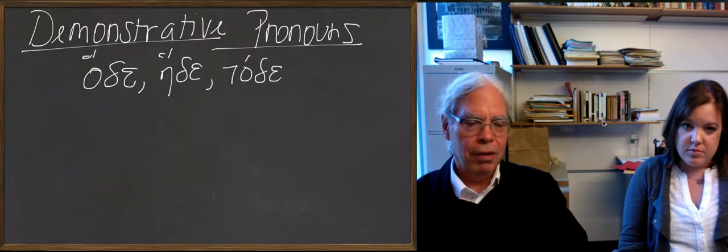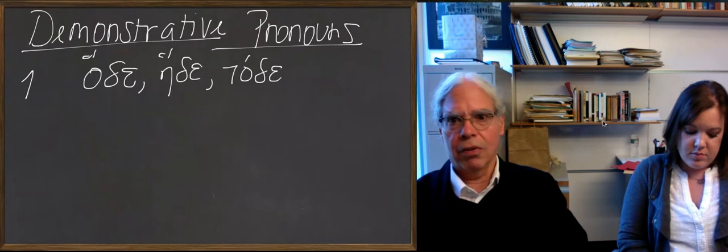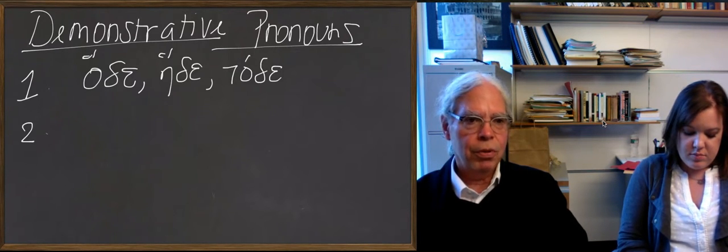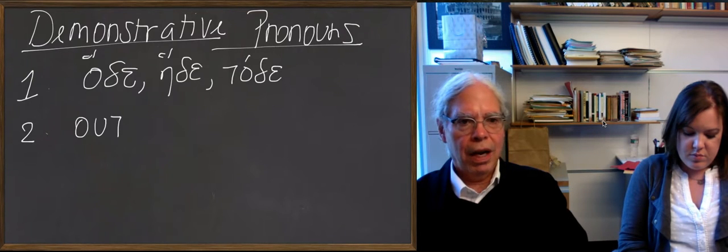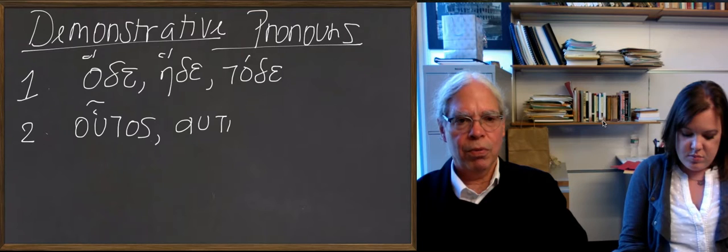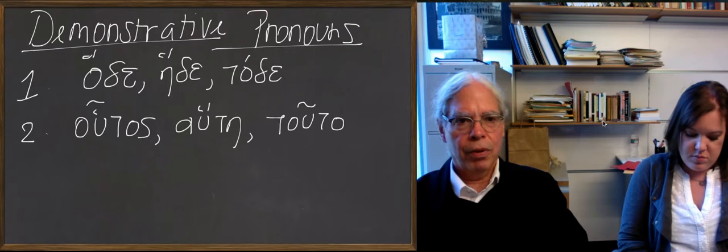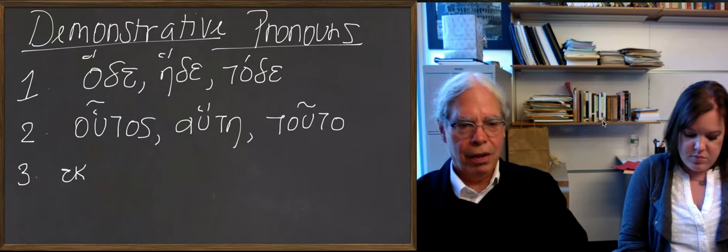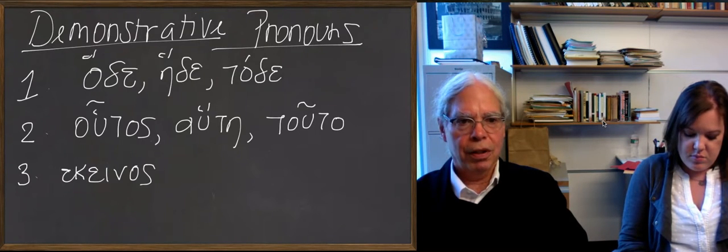Let's try and make sure that this is simpler and this is what you understand. So there's hāde hēde tāde, which the book translates this, and then there's another word that translates this, which is houtos, hautē, touto. I'll talk to you more about the forms of these words in a second, but let's just talk about the meaning. Okay? So the book translates, and there's the third one, ekeinos.